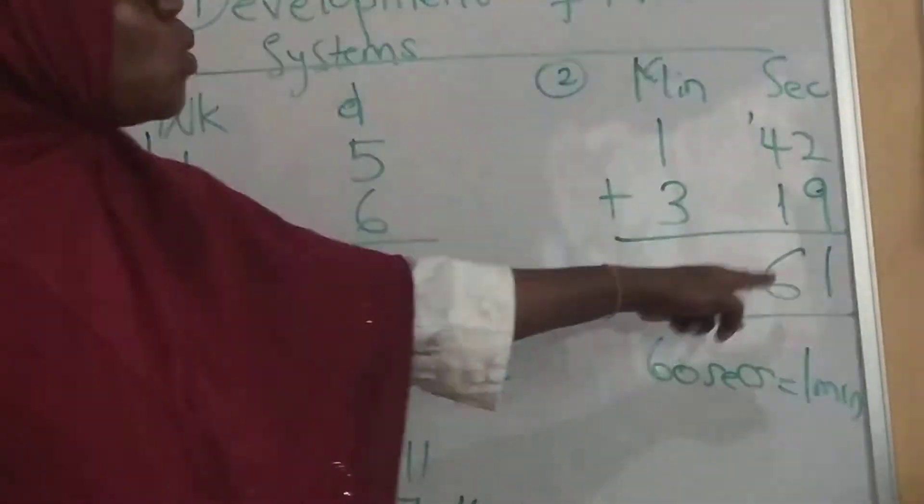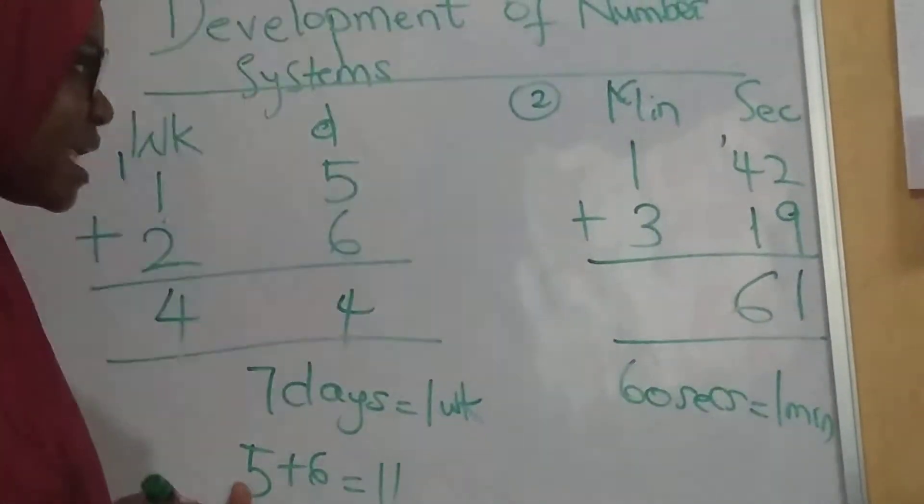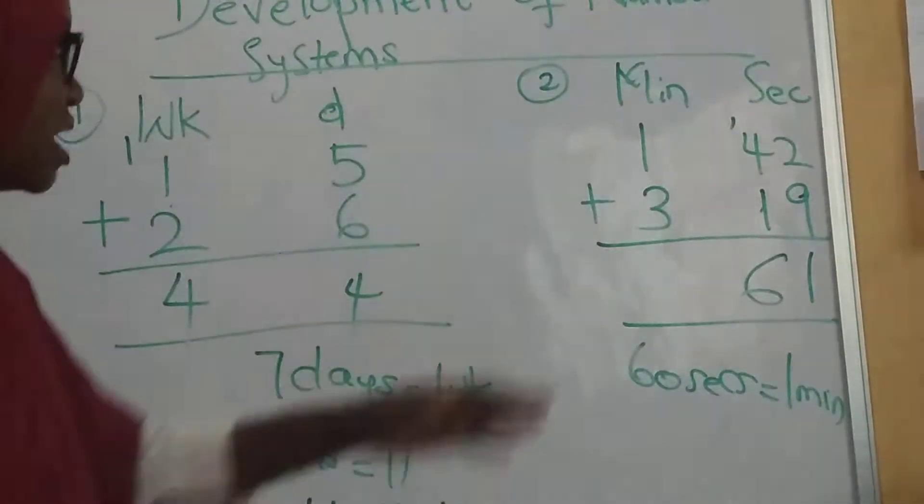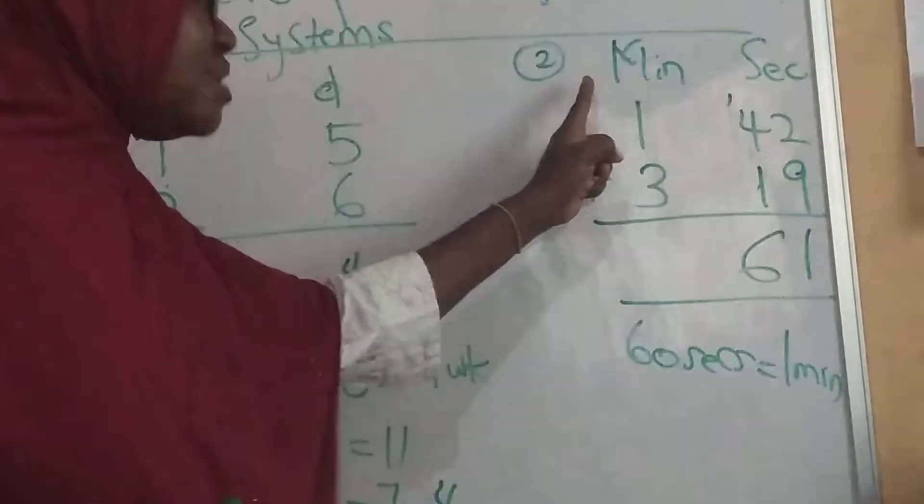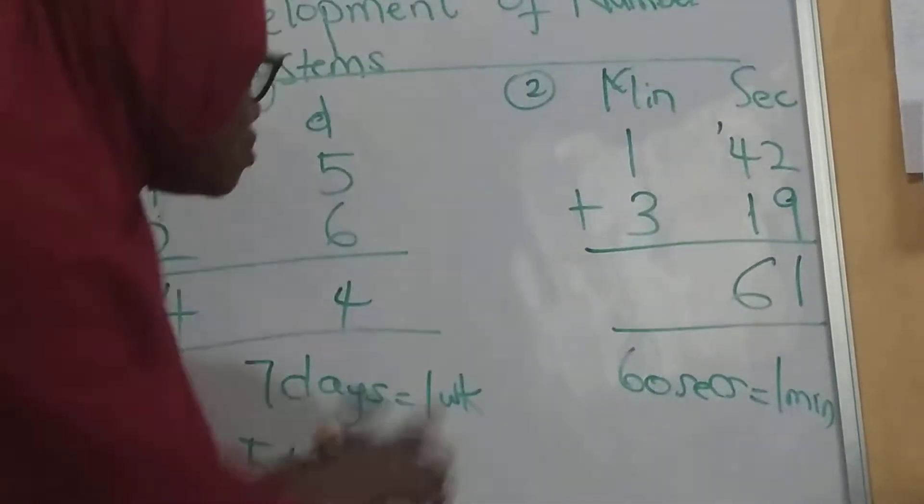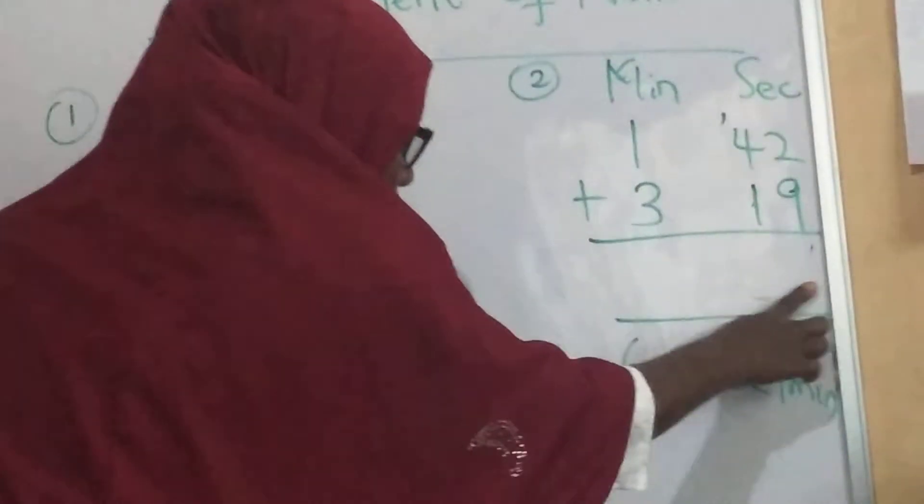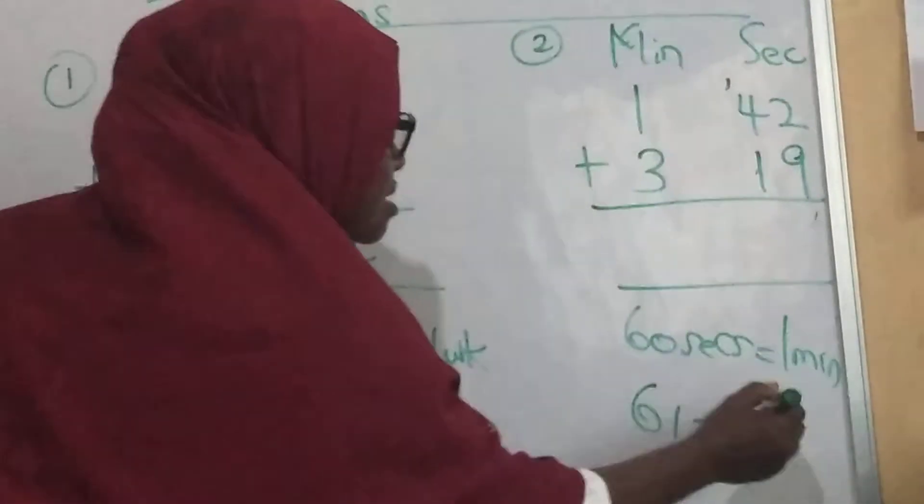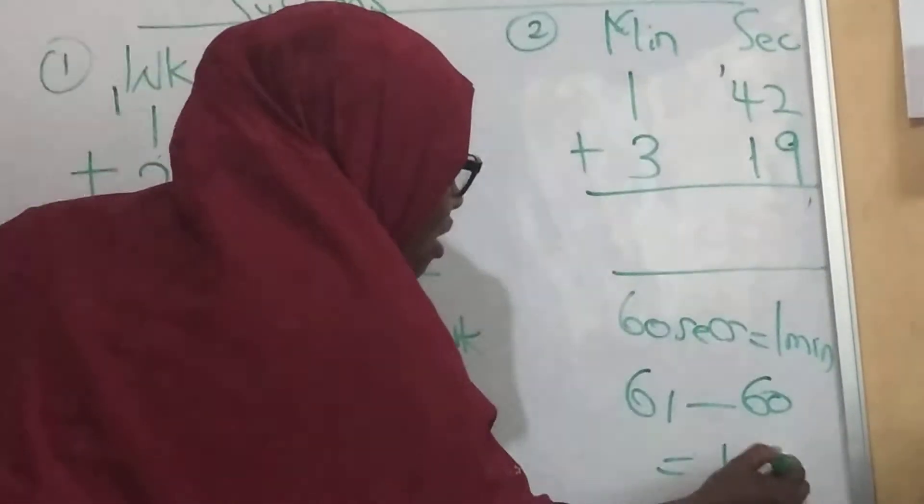So you can see that these 61 seconds, we can make a minute out of these 61 seconds. That means you cannot leave it like that because it is more than 60 seconds that usually make one minute. So what do I do? I claim this 61. The moment I claim this 61, I'll say 61 minus this 60 seconds, and that gives me one second.